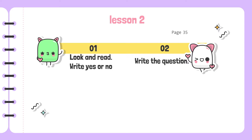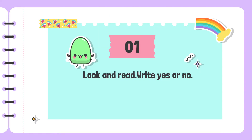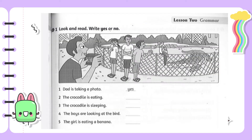Exercise number one: look and read, write yes or no. Exercise number two: write the sentence. Now look at exercise number one — look and read, write yes or no. In this exercise you have a picture with activities of people and animals, and you write 'yes' if the sentence is correct or 'no' if it is incorrect.